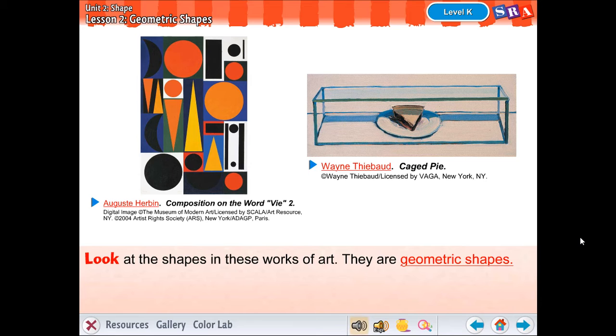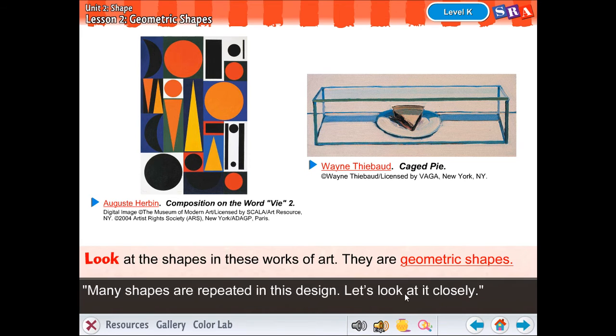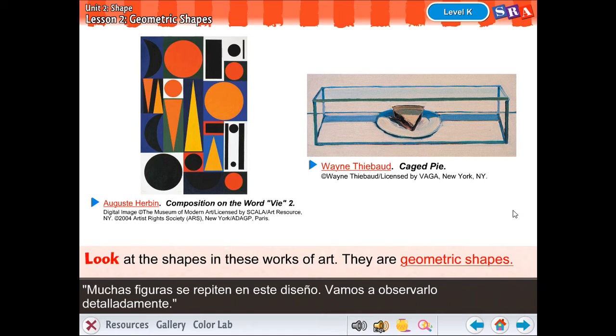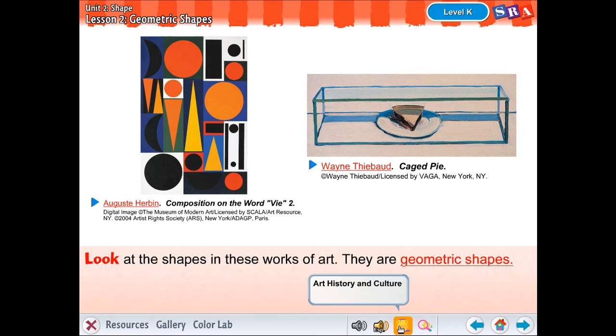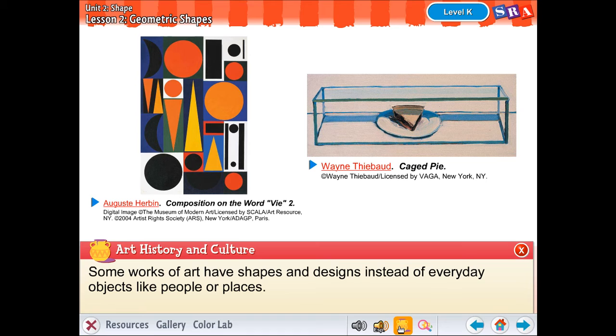Let's move to the next page. Let's look at these works of art. They're made of geometric shapes. Many shapes are repeated in this design. Let's look at it closely. Some works of art have shapes and designs instead of everyday objects like people or places.